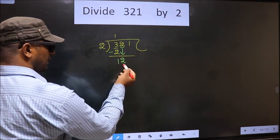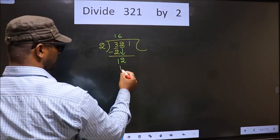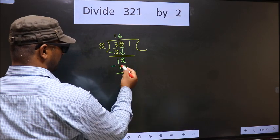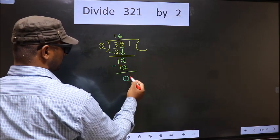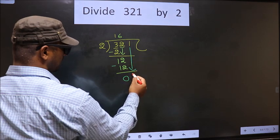Now here we have 12. When do we get 12 in the 2 table? 2 6s 12. Now you subtract. 12 minus 12 is 0. Now you bring down the beside number. That is 1 down.